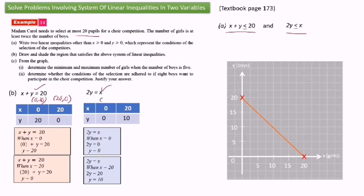The second line uses coordinates (0, 0) and (20, 10). Draw a straight line through these two points as well. Don't forget to label the equation on each straight line. Now we need to shade the region that satisfies the above system of linear inequalities. Referring to x plus y less than or equal to 20, less than or equal means we shade the region below that straight line.